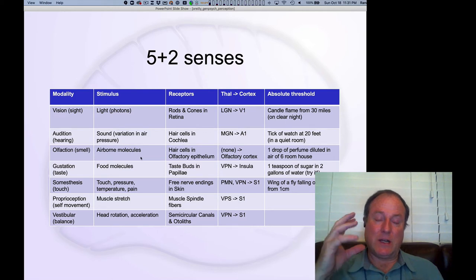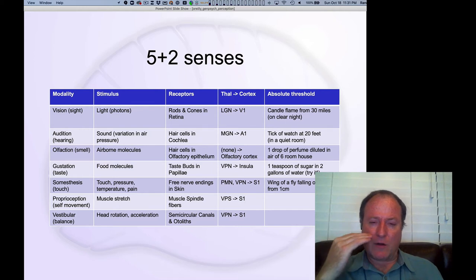Olfaction is transducing, detecting airborne molecules in the air that we're breathing. There's hair cells, it's always these hair cells for most of these things, inside the olfactory epithelium up inside your nose, these little layers of skin inside your nose. And interestingly, there is no thalamic area for olfaction. It goes straight into olfactory cortex with no thalamus. So the absolute threshold is one drop of perfume diluted in air in a room, in a six-room house. So pretty powerful. Often you can be really sensitive to small concentrations of these molecules, especially if you're sensing food molecules.